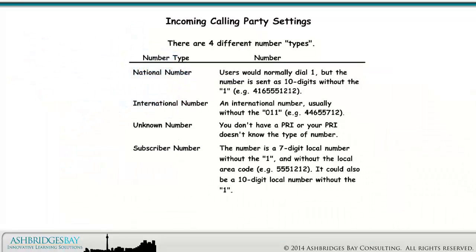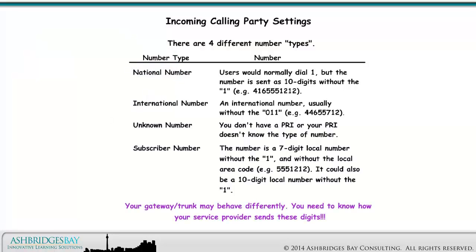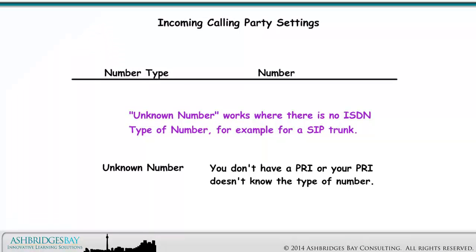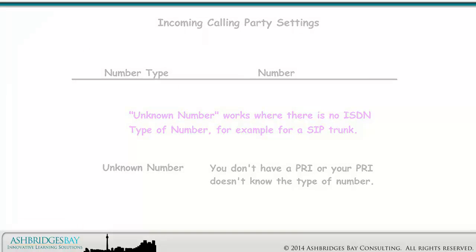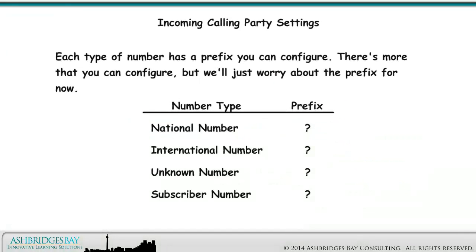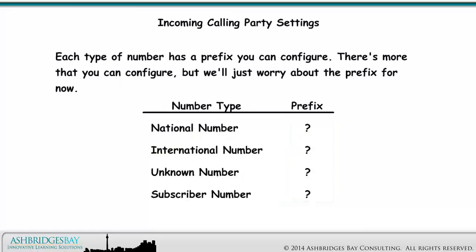A subscriber number could also be a 10-digit local number without the 1. Your gateway or trunk may behave differently — you need to know how your service provider sends these digits. Unknown number works where there is no ISDN type of number, for example for a SIP trunk. Each type of number has a prefix you can configure. There's more that you can configure, but we'll just worry about the prefix for now.